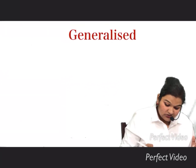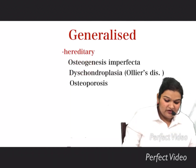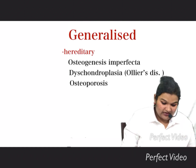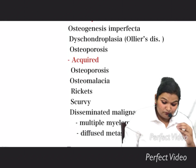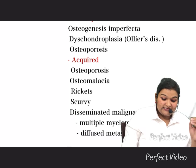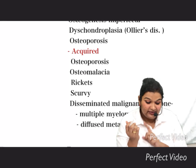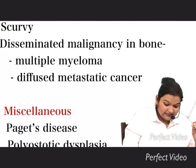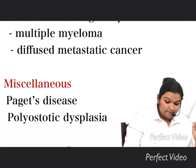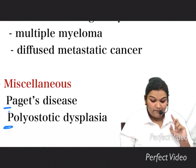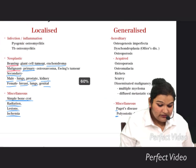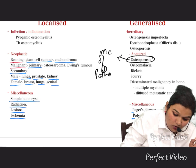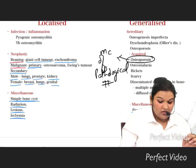The generalized causes include hereditary conditions such as osteogenesis imperfecta and dyschondroplasia, and acquired conditions such as osteoporosis, osteomalacia, rickets, and scurvy. Disseminated malignancies in bone include multiple myeloma and diffuse metastatic cancer. Miscellaneous generalized causes include Paget's disease and polyostotic fibrous dysplasia. Of all these causes, osteoporosis is the most common cause of pathological fractures.